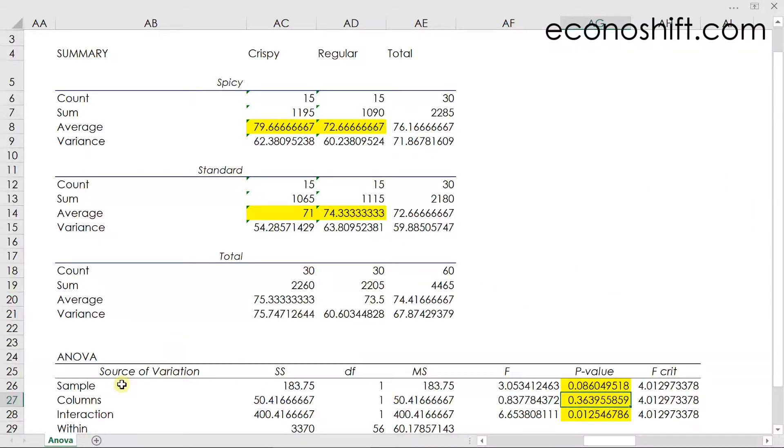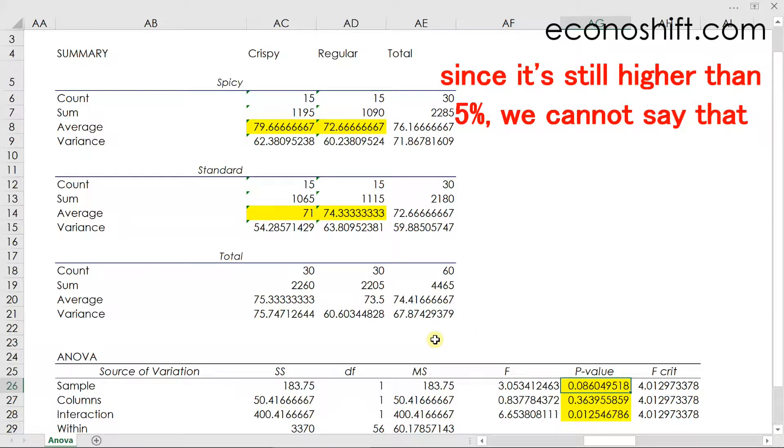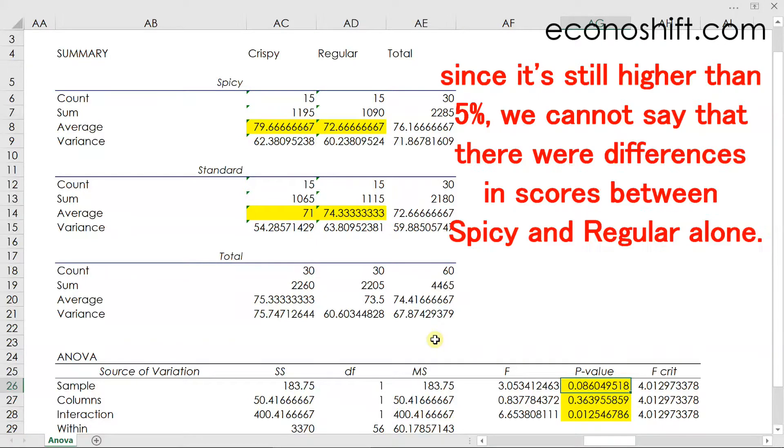Next, it says sample above. That refers to the horizontal direction, spicy and standard. Their p-value is 0.08, which is 8%. This is lower possibility than the last one, but since it is still higher than 5%, we cannot say that there were differences in scores between spicy and regular alone.